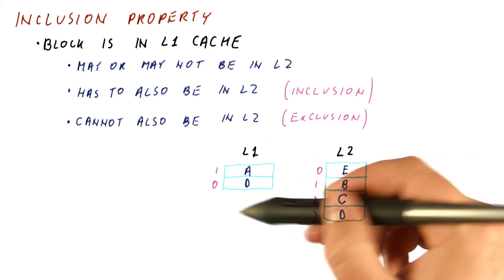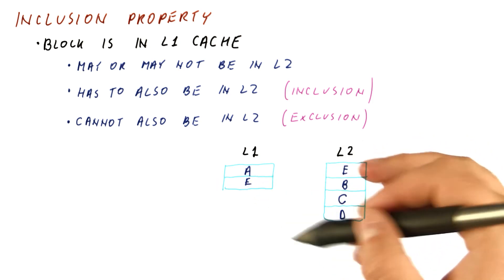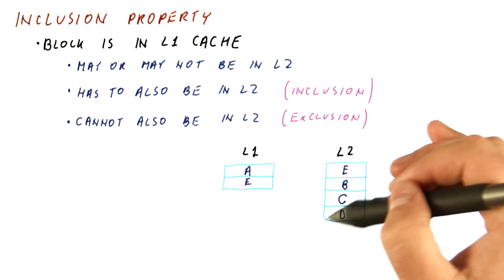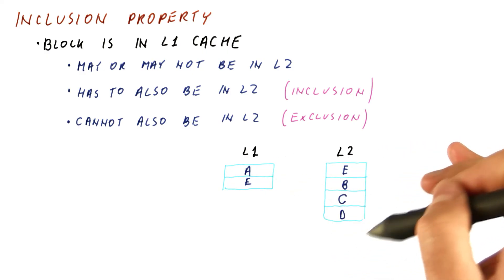However, in the L1 cache, it will replace the least recently used block, which is D. So at this point we no longer have inclusion, because A is in the L1 cache but is no longer found in the L2 cache.